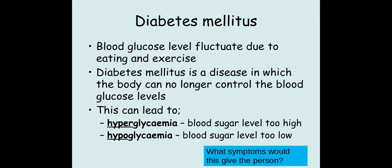In an exam I have seen questions asking you what this could be linked to in terms of symptoms. Diabetes can actually impact upon blood pressure because it affects osmosis. So it can lead to having a high blood pressure or a low blood pressure, and because it can impact upon blood pressure it can also cause things like dizziness and fainting.